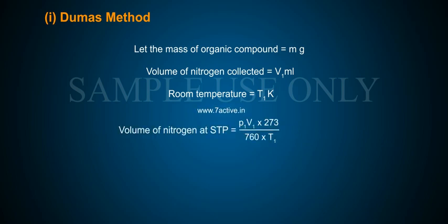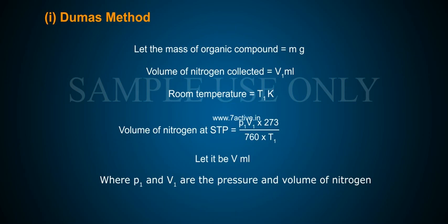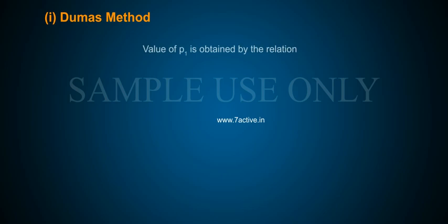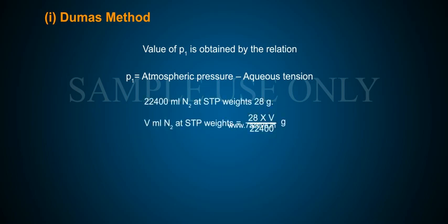Volume of nitrogen at STP equals P1V1 × 273 / (760 × T1), let it be V1', where P1 and V1 are the pressure and volume of nitrogen. Value of P1 is obtained by the relation: P1 equals atmospheric pressure minus aqueous tension.